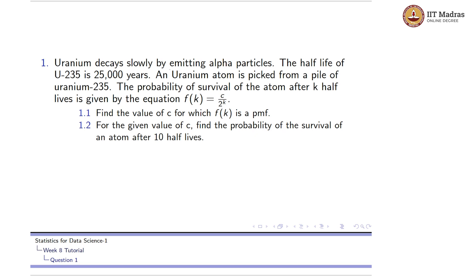Uranium decays slowly by emitting alpha particles. The half-life of U-235 — this is the nomenclature for uranium — is 25,000 years, and a uranium atom is picked from a pile of uranium-235. Let's assume that we have an infinite number of uranium atoms and from that we picked one particular atom.